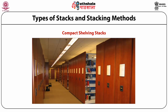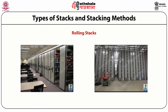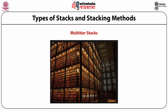Compact shelving is a set of stacks that ride on movable carriages over rails installed on the floor. They can be operated manually or by a motorized drive system. This type of shelving is used by libraries which have space problems, as compact shelving eliminates the need to keep open spaces for aisles between shelving units. Rolling stacks are metal stack units mounted on ball bearing wheels, placed side by side. Multi-tier stacks consist of stacks from floor to the roof, constructed with a self-supporting metal frame extending from basement to the roof, designed to carry the weight of the book load.